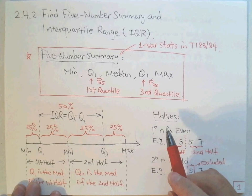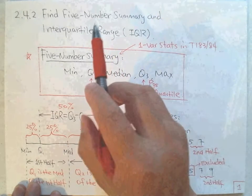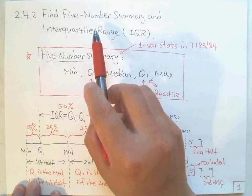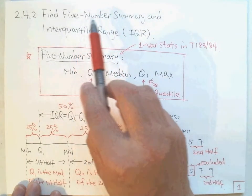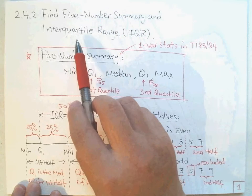Hello, this is Paul from Forsyth Tech. In this lecture, I will introduce the five-number summary and the interquartile range, IQR.